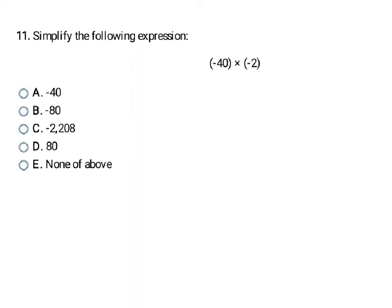Now I'm looking at multiplying two negative numbers. Same signs in multiplication means your answer is going to be positive — two negatives make a positive. So I know right away it can't be A, B, or C because my answer has to be positive. I just take 40 times 2, which is 80. My final answer is positive 80, which is D.